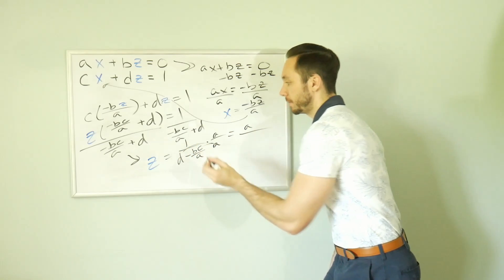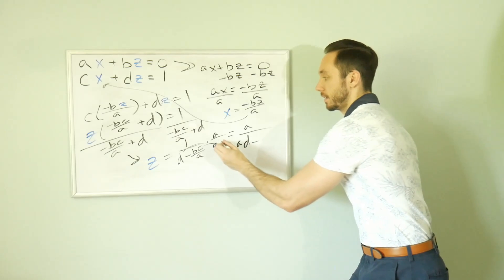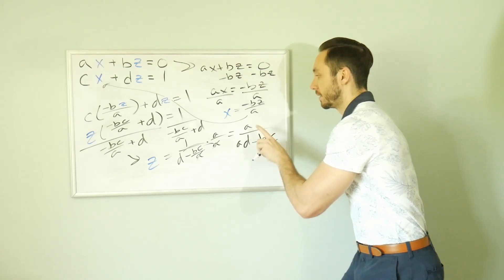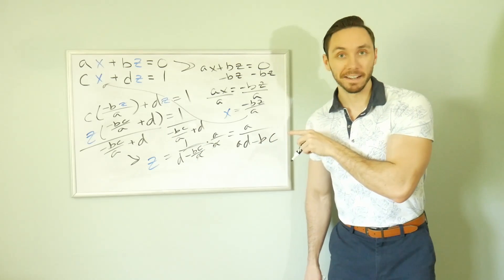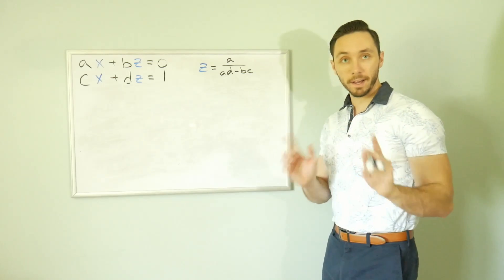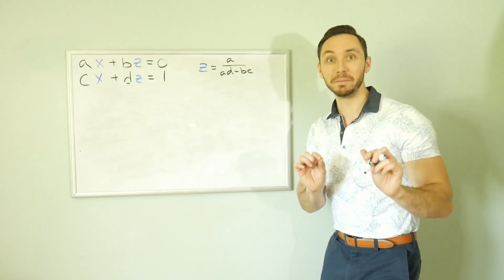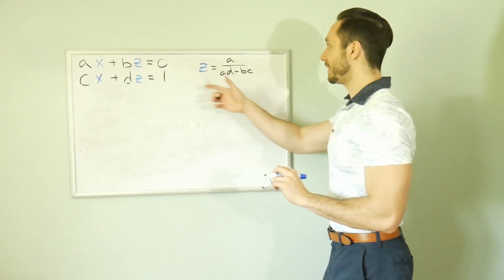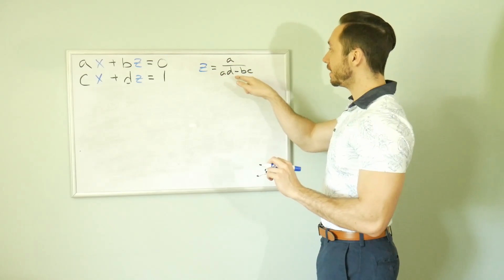AD minus, cancel, BC. Okay, that's going to help us. That is, we like that. That's what we like. Okay, so I have to be, so all of a sudden, this is a real MinuteMath video. I know that Z is equal to A over AD minus BC.